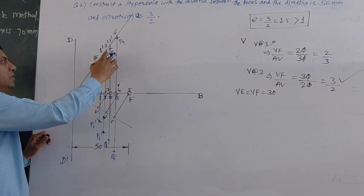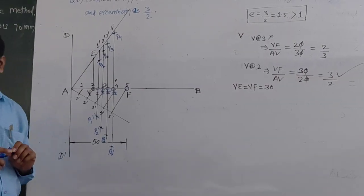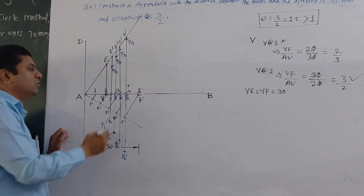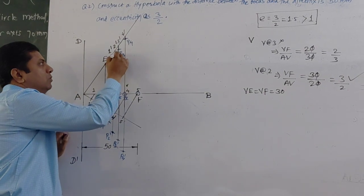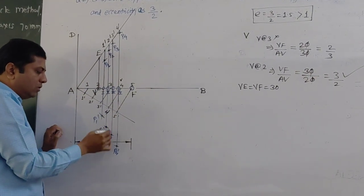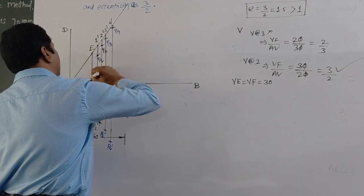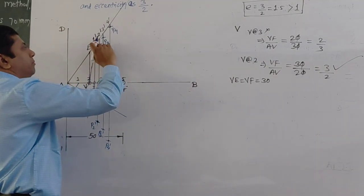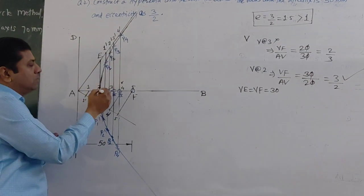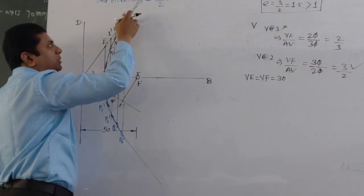Now we have points P1 to P4 and P1' to P4'. With the help of a French curve, draw a smooth curve that passes through vertex V, P1, P2, P3, P4 — and just extend it. After P4 the curve becomes almost straight, so extend it as a near-straight line.